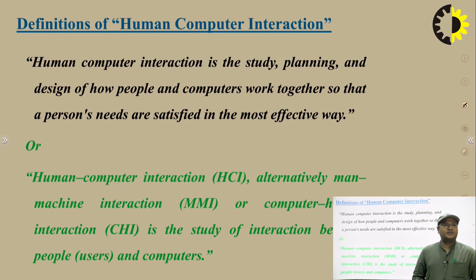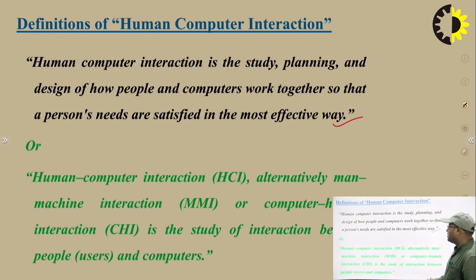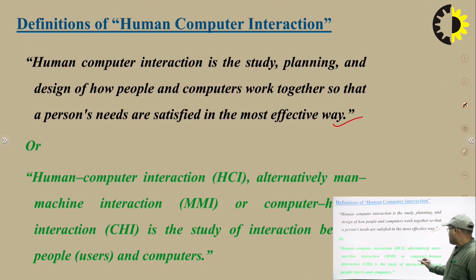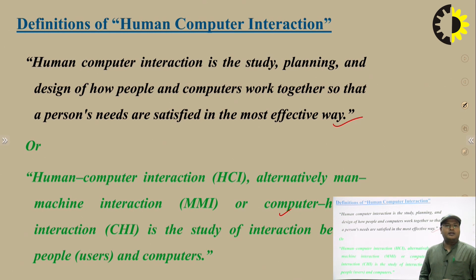The definition of Human Computer Interaction is: it is the study, planning, and design of how people and computers work together so that the person's needs are satisfied in the most effective way. Another definition states: Human Computer Interaction — alternatively machine interaction or computer human interaction — is the study of interaction between people and computers. People means users, clients, and customers.